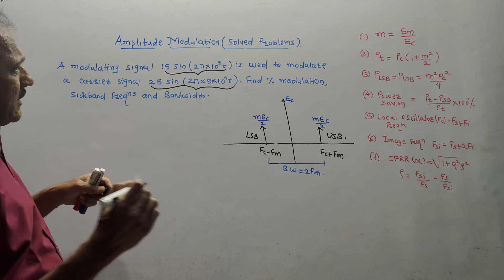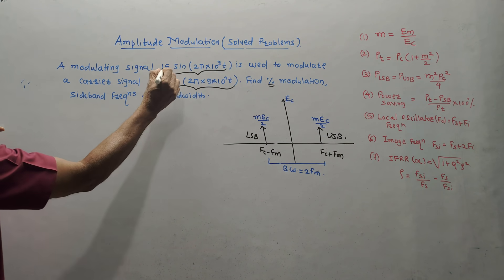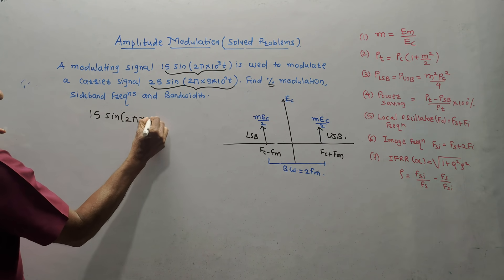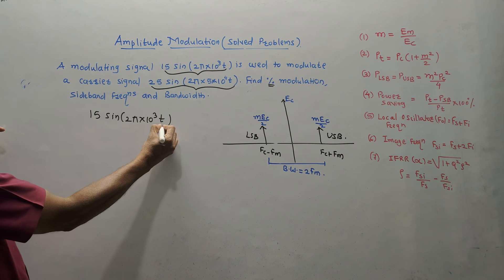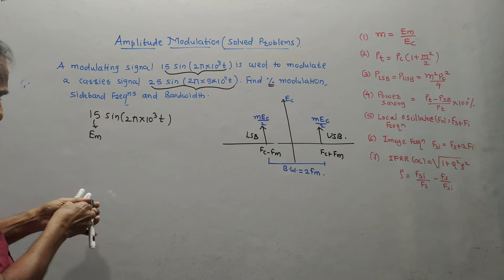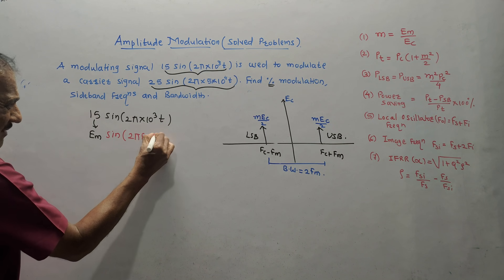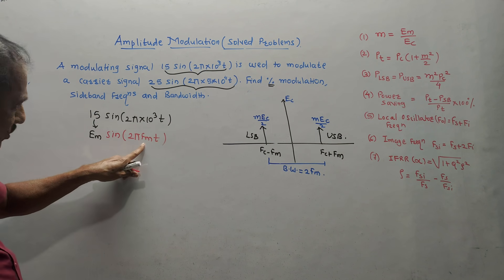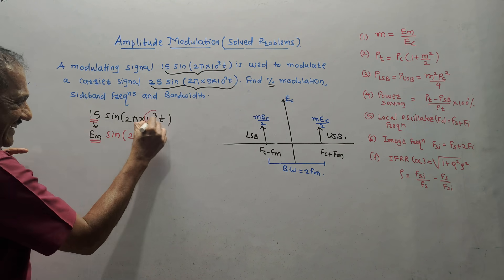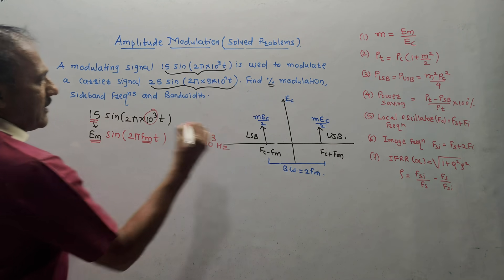Now, to solve this numerical, we need to calculate the percentage modulation. From the given equation for the modulating signal — 15 sin(2π × 10³ × t) — the value 15 represents EM, the amplitude of the modulating signal. Comparing with the standard formula EM sin(2π FM t), the value of EM is 15 and the value of FM is 10³ Hz.